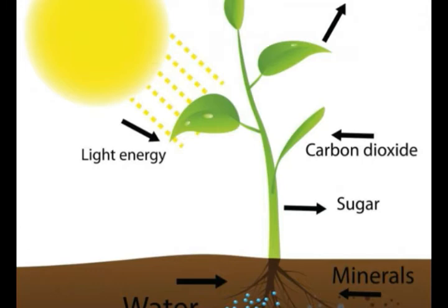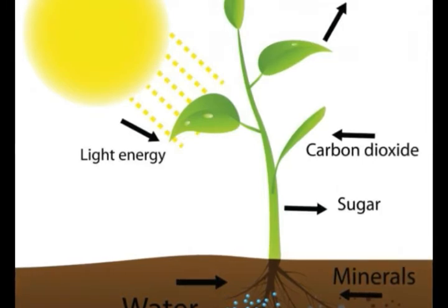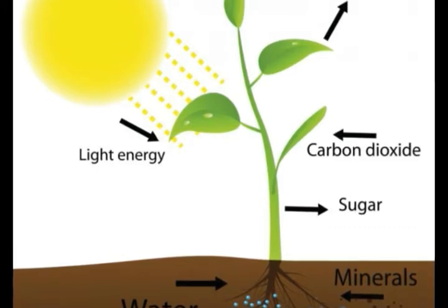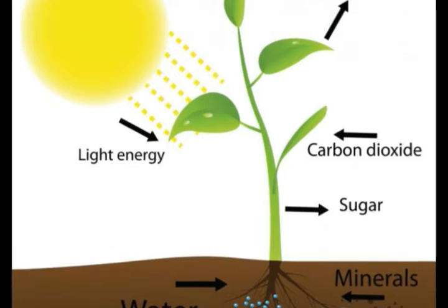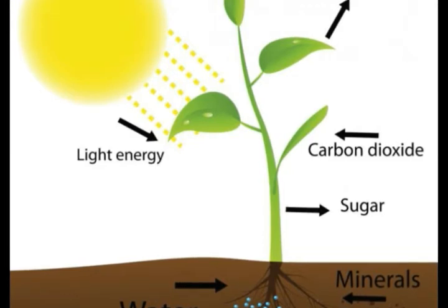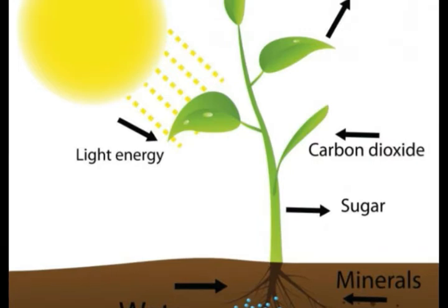When the atmosphere was first developing, for example, cyanobacteria contributed most of the oxygen. It is thought that, initially, oxygen produced by cyanobacteria was used up reacting with iron in soils, rocks, and the ocean, forming iron oxide compounds and minerals.